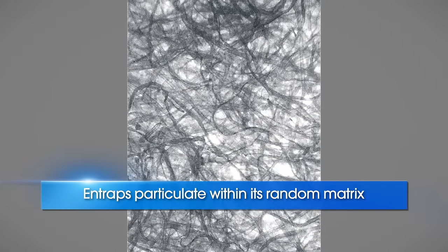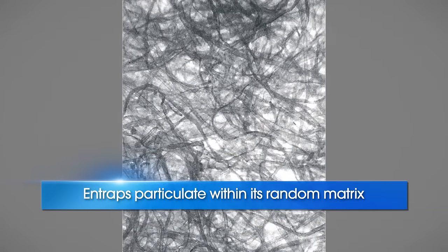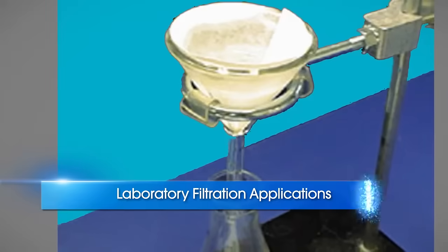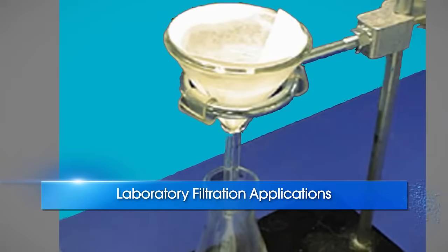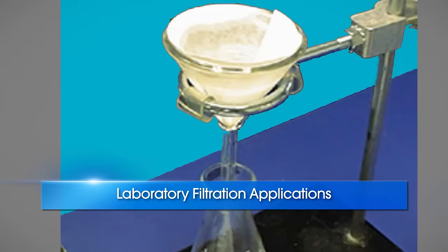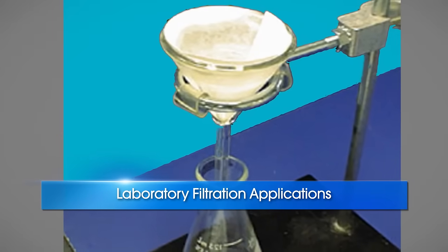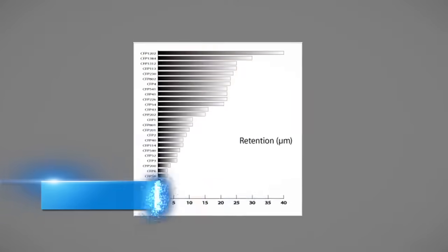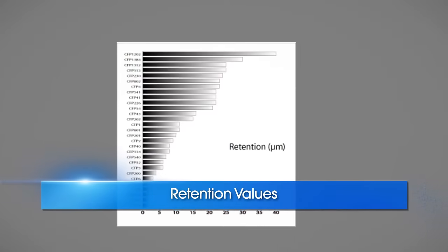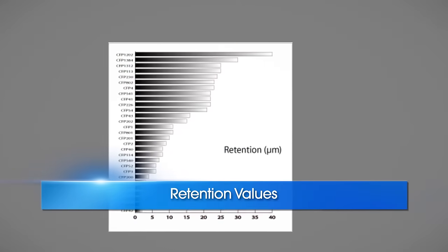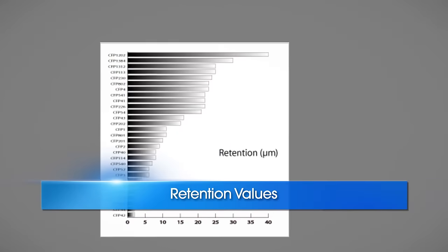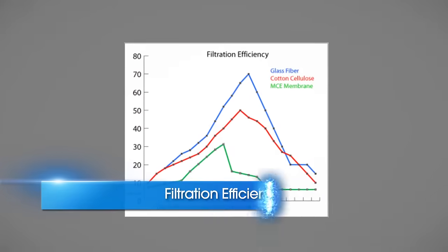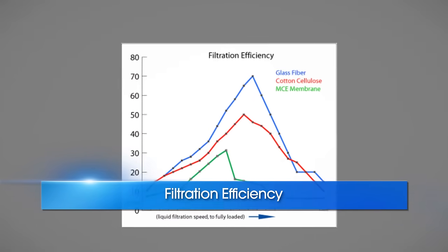Laboratory filtration applications are accomplished with a range of qualitative, quantitative, low-ash, ashless, and hardened filters. Cellulose filters are available in a wide range of particle retention values from 2 to 40 microns. Filtration efficiency can be customized to adjust matching filtration speeds and load requirements to specific applications.